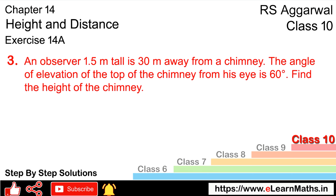Let's do question number 3 of Exercise 14a, that is height and distance. Question 3: An observer 1.5 meter tall is 30 meter away from a chimney. The angle of elevation of the top of the chimney from his eyes is 60 degrees. We have to find the height of the chimney.